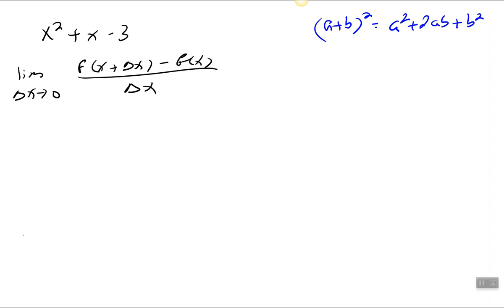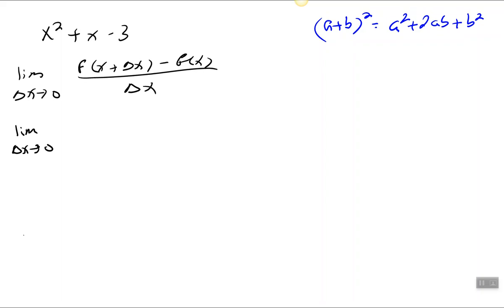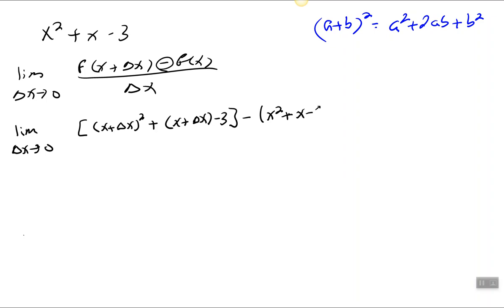So we want to find the derivative of x squared plus x minus 3 by using the limit process. The function is x squared plus x minus 3. I'm going to work my way through this using the formula, remembering that (a + b)² = a² + 2ab + b². So I have x squared plus x minus 3, replacing x with x plus delta x in the first part. So (x + Δx)² plus (x + Δx) minus 3, then minus f(x), which is x squared plus x minus 3, all over delta x.